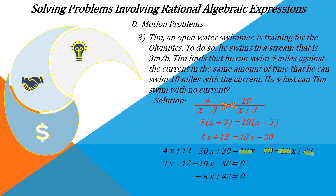Dividing both sides and rearranging the equation, we subtract 42 from both sides and then divide both sides by negative 6.